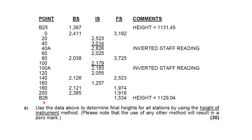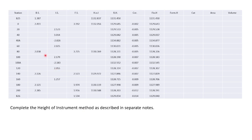The first question is to use the data to determine the final heights for all stations by using the height of instrument method. Please note that the use of any other method results in a zero mark. So this is a specific exam question where we could not use the rise and fall method. However, you can use the rise and fall in another scenario. So the first thing you'll do is calculate your height of instrument and calculate all your final heights — the normal method: calculate height of instrument, then your relative heights or reduced heights. Use a correction which is your last reduced height minus your final height, apply it over the few setups, and then you get your final heights.